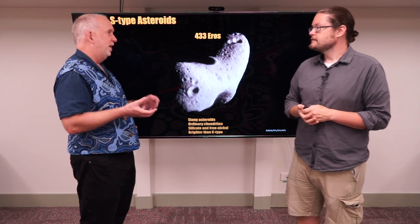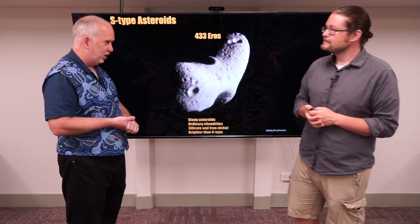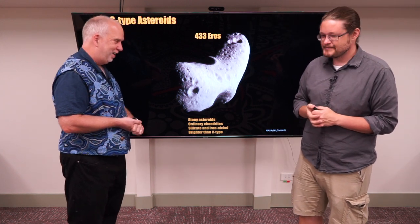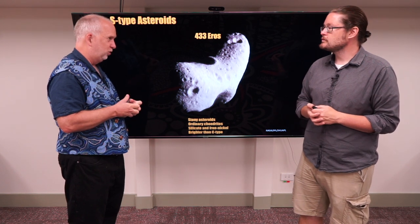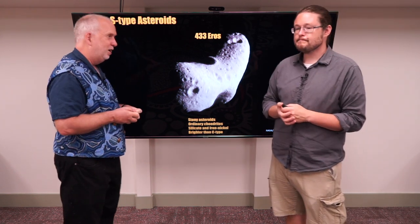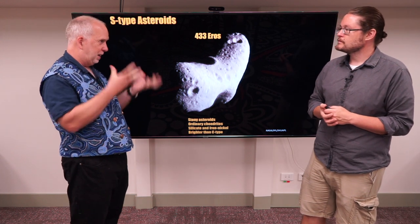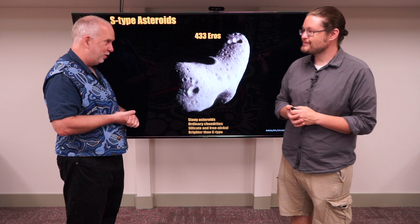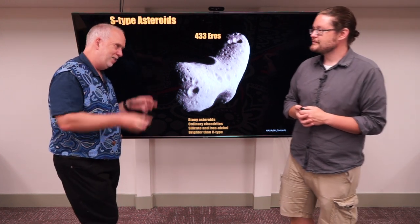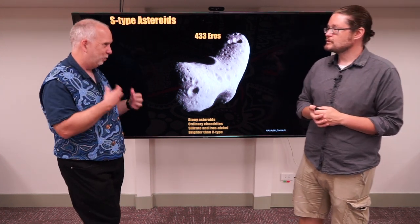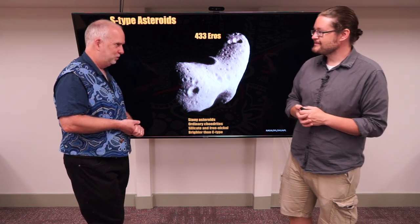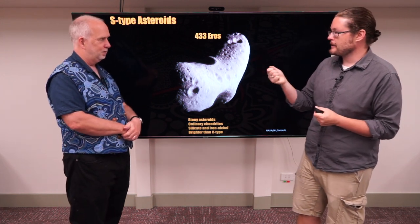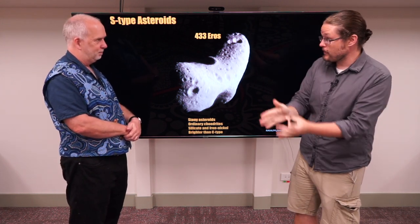When you measure how bright something is, you don't really know whether it's bright because it's big or because it has a nice polished white surface. What you can do is look at both the infrared emission and the optical emission. Something very black won't reflect much sunlight but will radiate a lot of infrared radiation. So the infrared tells you how big it is, and comparing that with the optical wavelength tells you whether it's got a bright or dark surface. These measurements — like the albedo — are really critical, requiring both optical and infrared data.